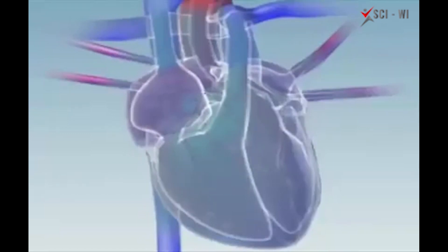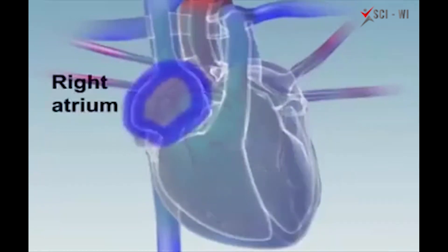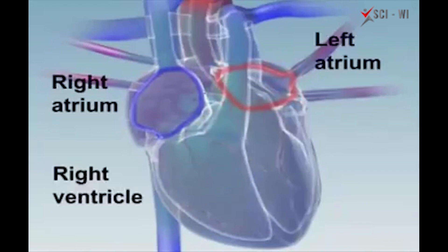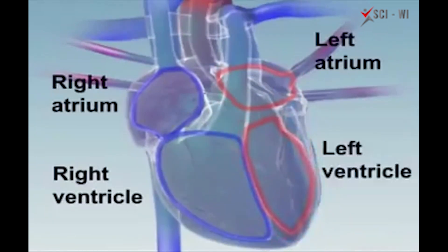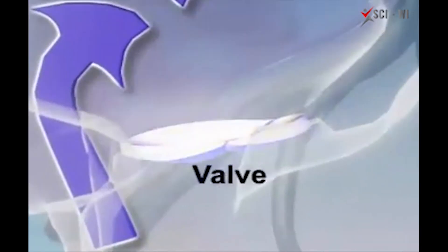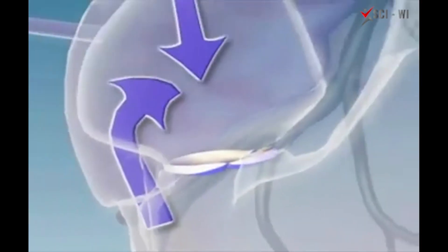The inside of a normal heart is divided into four chambers: the right atrium, left atrium, right ventricle, and left ventricle. The circulatory loop begins with blood entering the right atrium of the heart. When the heart beats, blood flows from the right atrium into the right ventricle through the tricuspid valve. In a healthy heart, the valve keeps blood flowing in one direction.